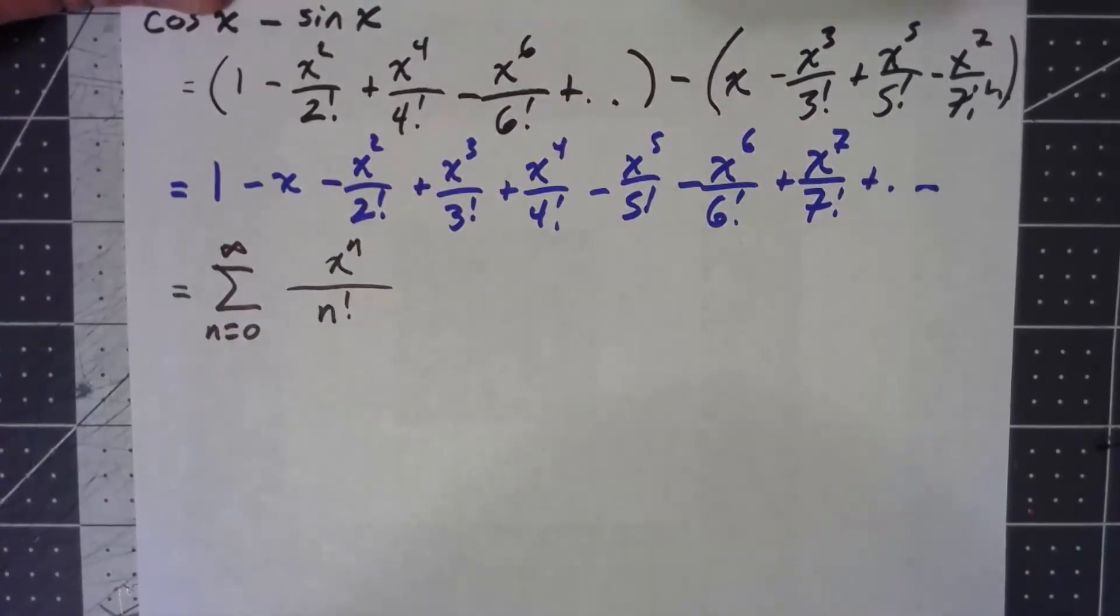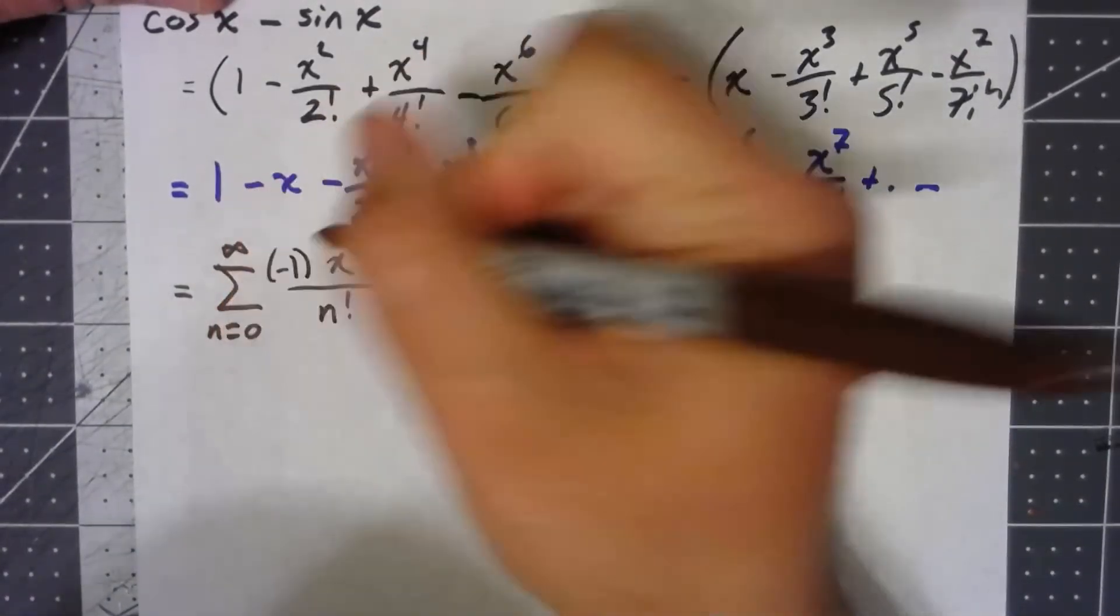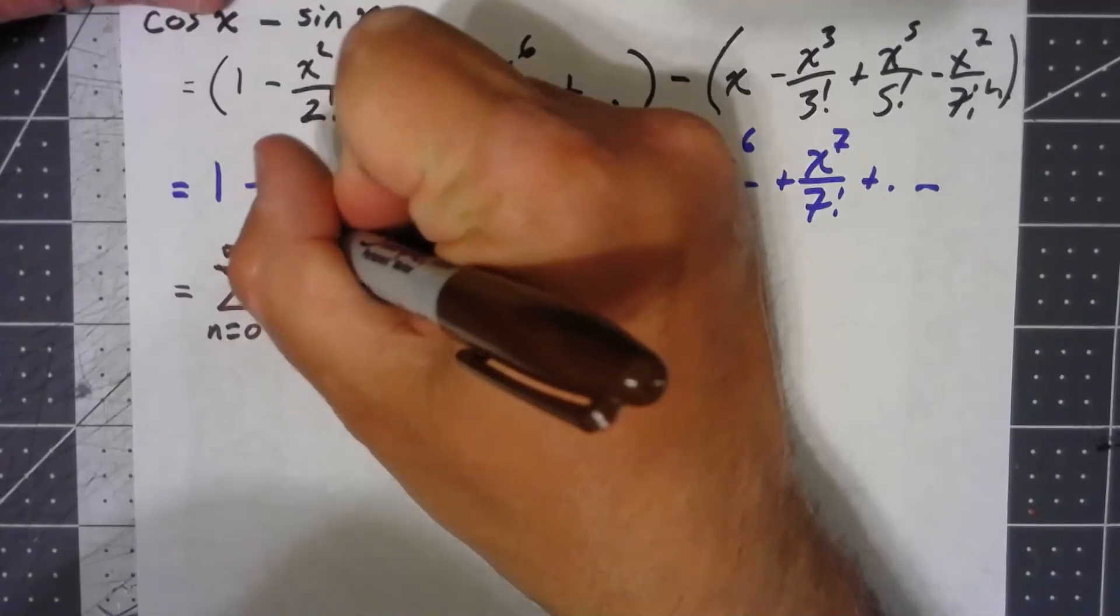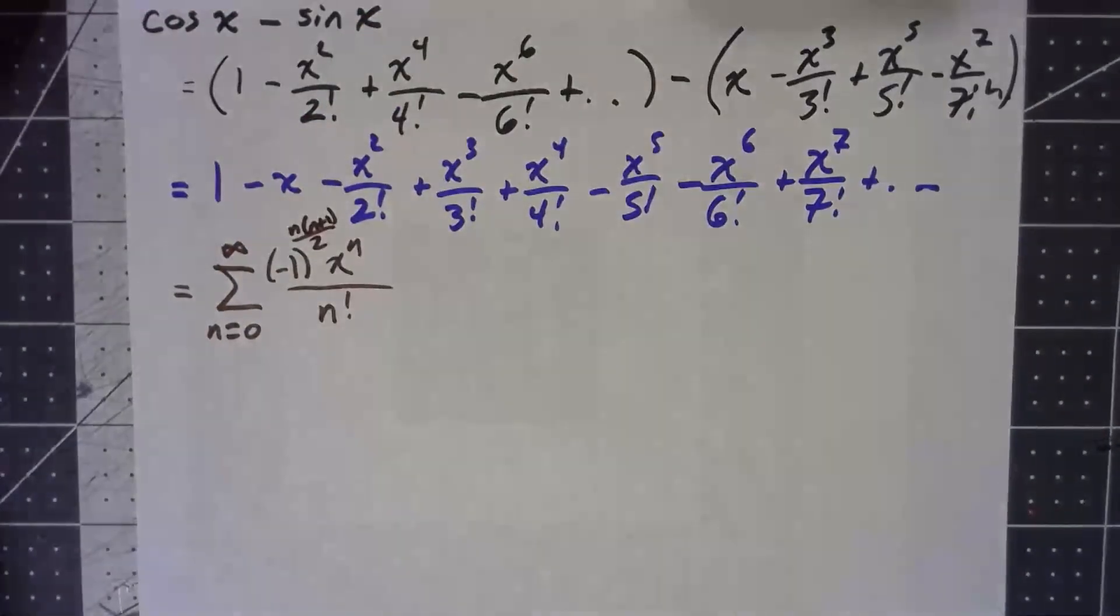The hard part is to get that positive, negative, negative, positive, positive on like that. And check that it works, but negative 1 to the n times n plus 1 over 2 power does that.